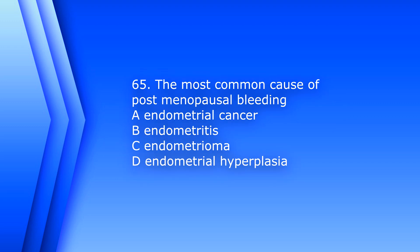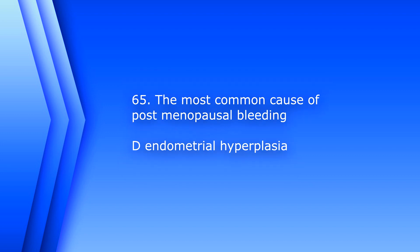Question 65. The most common cause of postmenopausal bleeding is: A. Endometrial cancer, B. Endometritis, C. Endometrioma, D. Endometrial hyperplasia. The answer is D — the most common cause is endometrial hyperplasia.